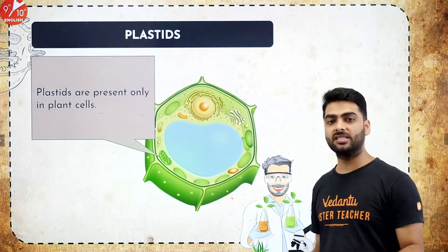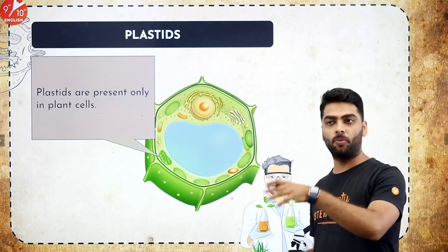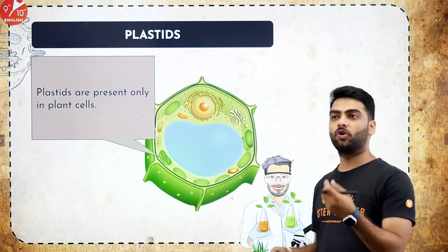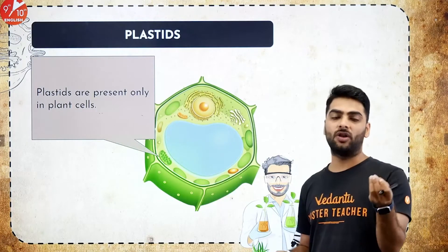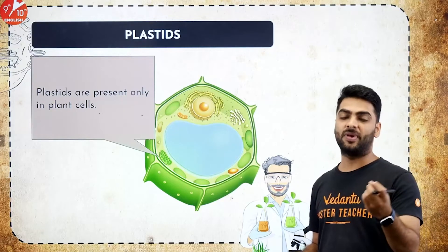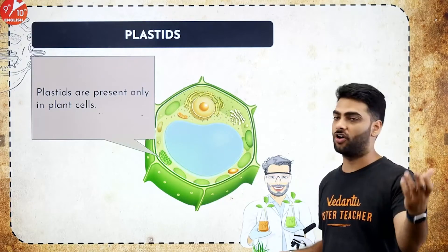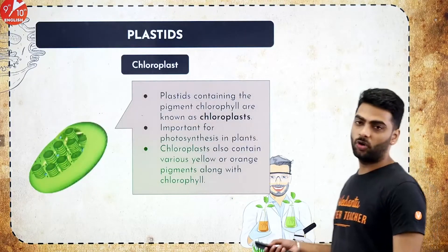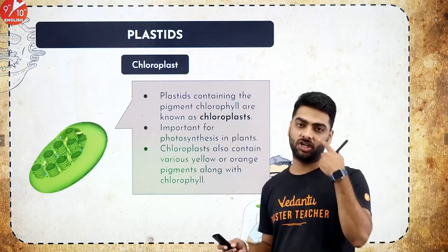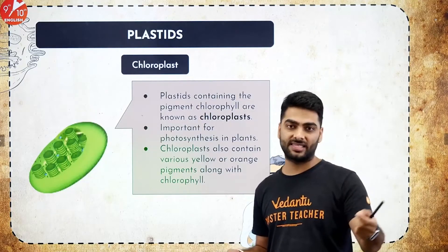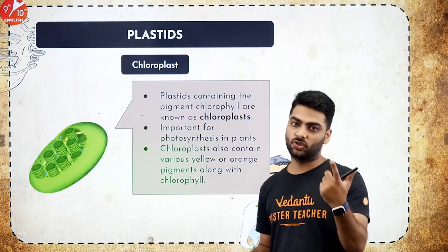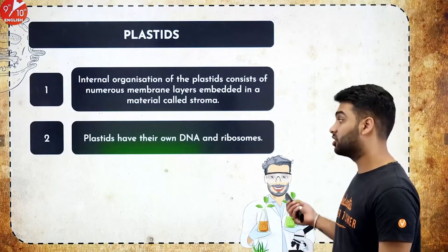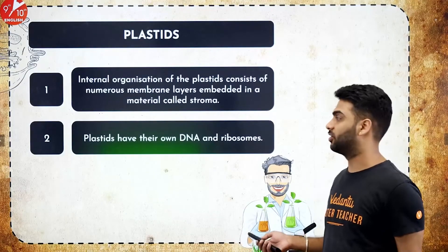Plastids are found only in plants and are colorful organelles. There are three types: chromoplast, chloroplast, and leucoplast. Chloroplast turns into chromoplast on ripening — chloroplast is green, chromoplast is yellow, red, or orange, and leucoplast is colorless and meant for storage of oil, starch, etc. Chloroplast is a double membrane structure with thylakoids, grana, lamella, and frets, and traps sunlight to carry out photosynthesis. Plastids also have their own DNA and ribosomes, just like mitochondria.